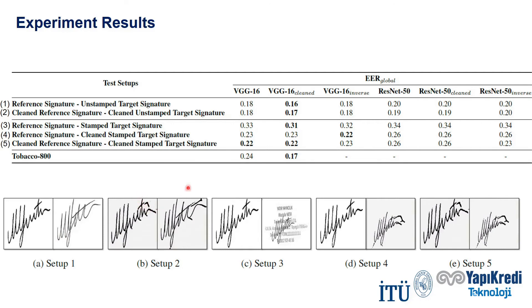Setup 3 has stamped target signatures similar to the real-world scenario. Verification performance significantly deteriorates in this setup. In setup 4, when we apply our stamp cleaning method to stamped target signatures, verification accuracy significantly increases.